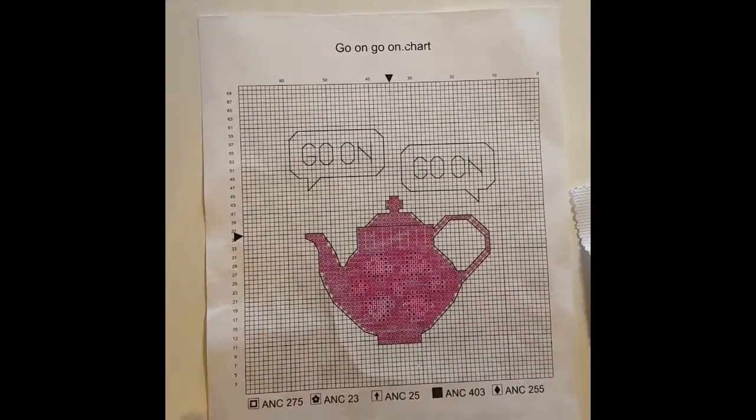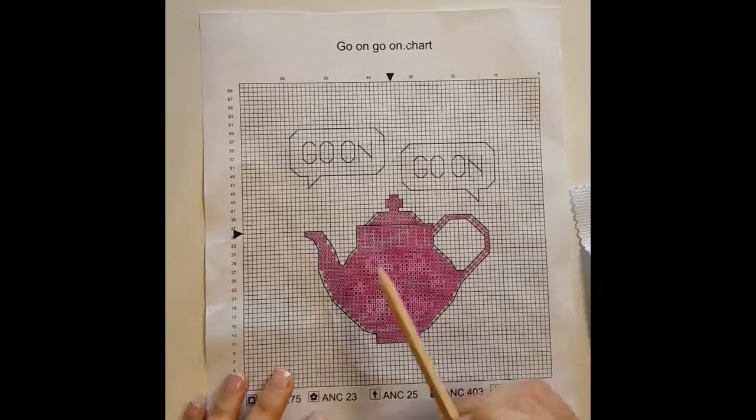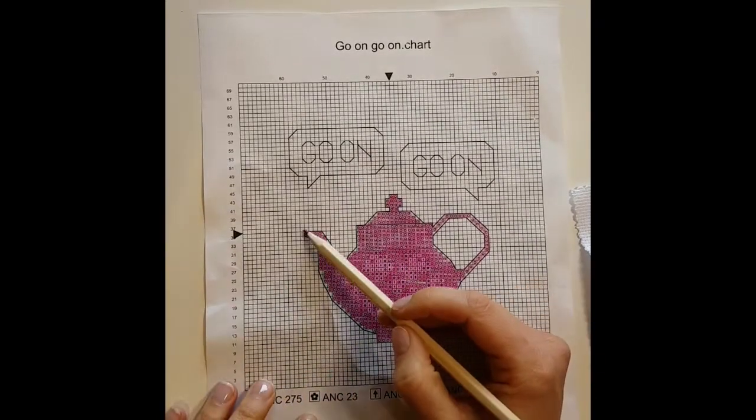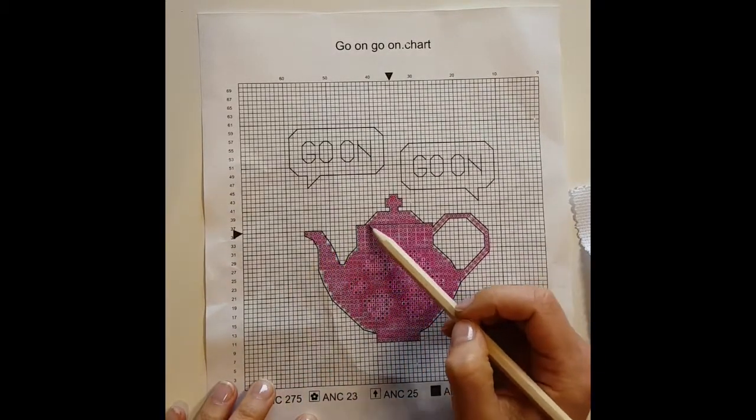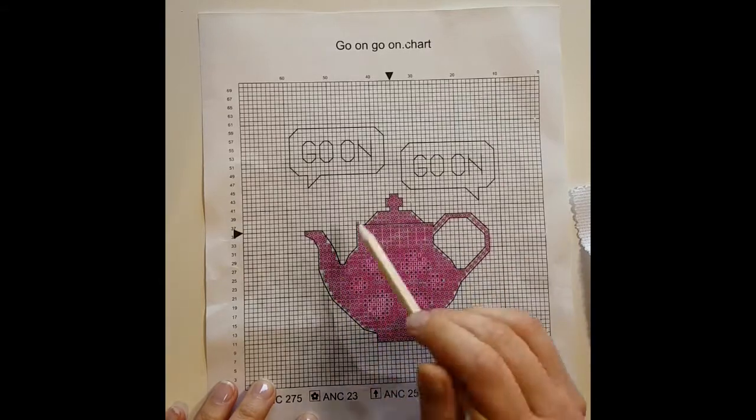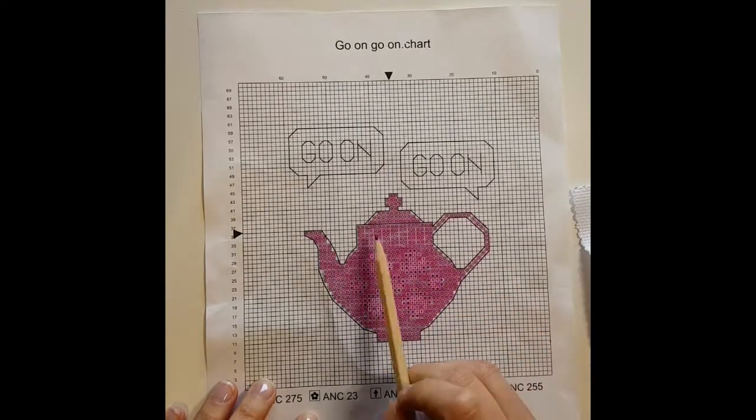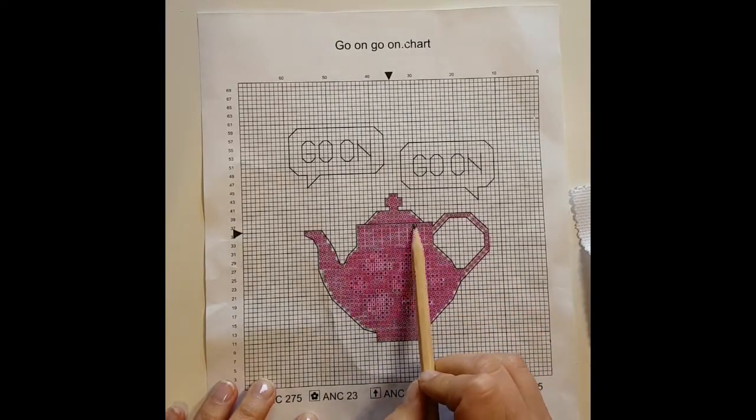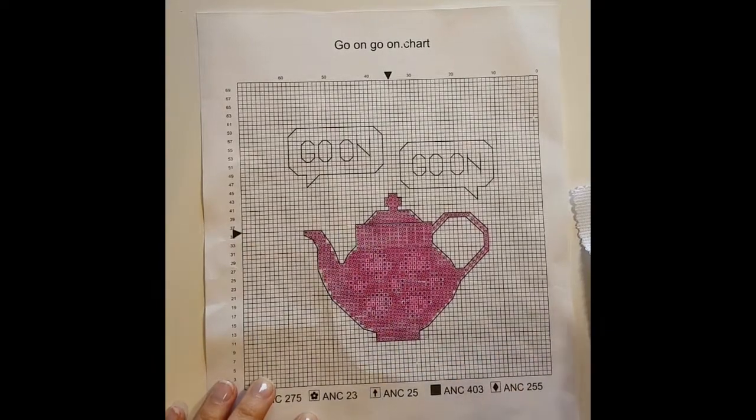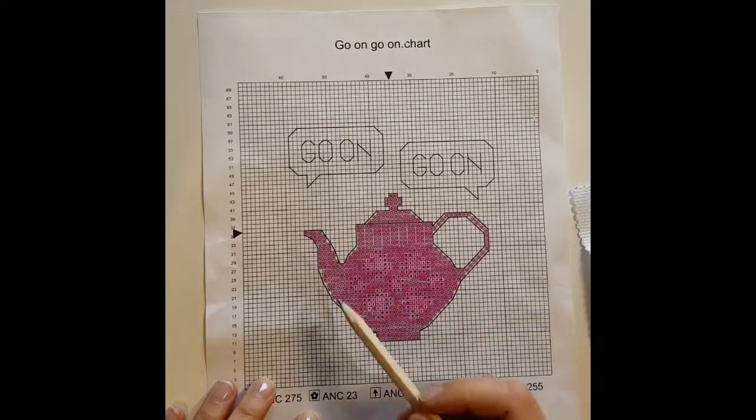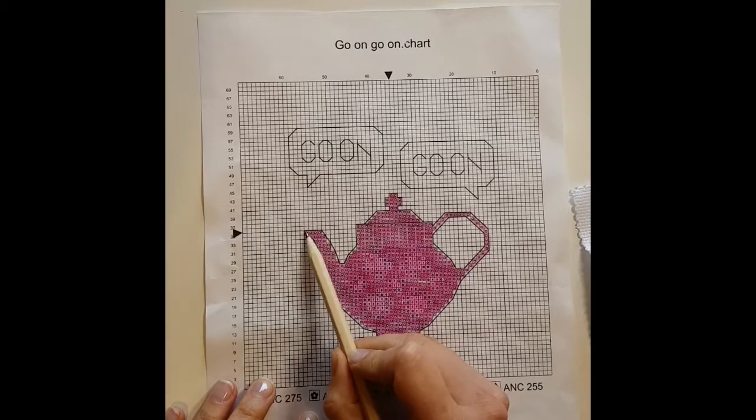So here we have our pattern. I have finished the cross stitches and I want to follow this black line around my teapot and then this line is going through the teapot itself. You can start wherever you want. I am going to start over here.